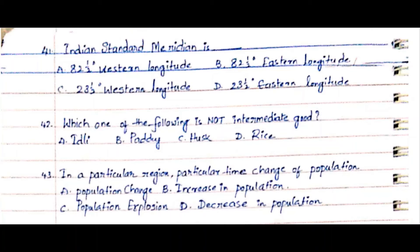Question 43: In a particular region, at a particular time, change of population is called. Option A. Population change, Option B. Increase in population, Option C. Population explosion, Option D. Decrease in population. The answer is Option A. Population change.